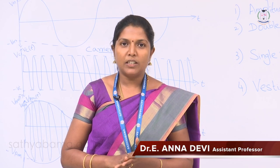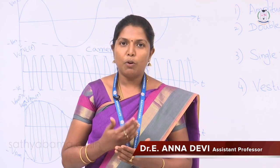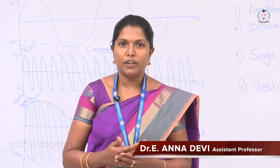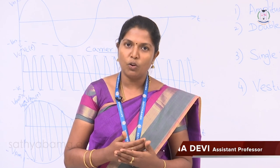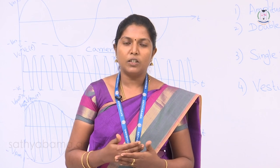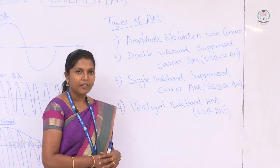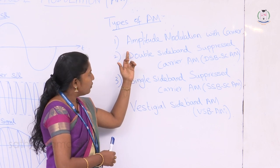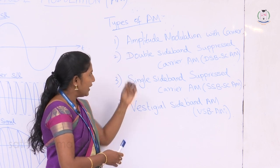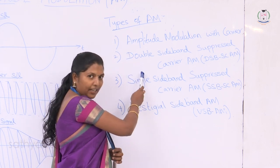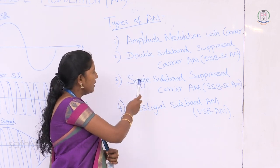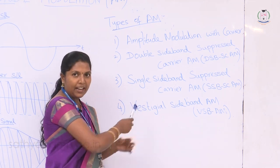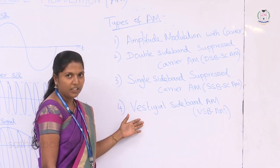Amplitude modulation has wide applications. The important applications are it is used for transmission of audio and video signals, and also in two-way mobile communications. Amplitude modulation is of four types: amplitude modulation with carrier, double sideband suppressed carrier AM, single sideband suppressed carrier AM, and vestigial sideband AM.